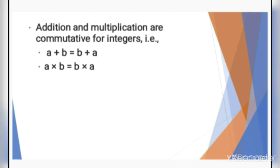Another property is that addition and multiplication are commutative for integers. That means we can add or multiply 2 integers in any order. If we do A plus B or B plus A, we will get the same answer, where A and B are integers. For example, 5 plus 3 or 3 plus 5 both give 8.